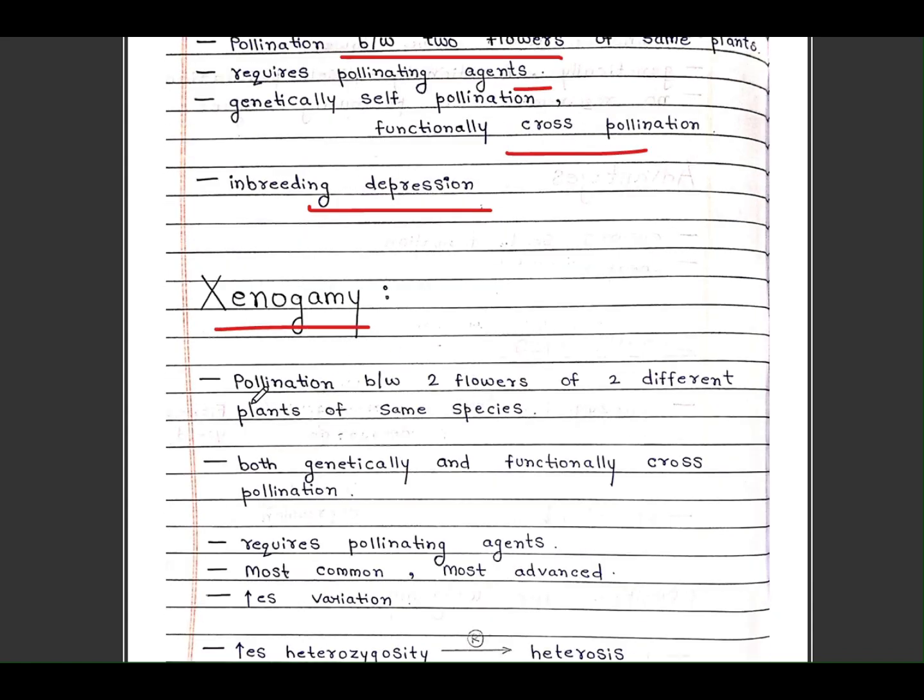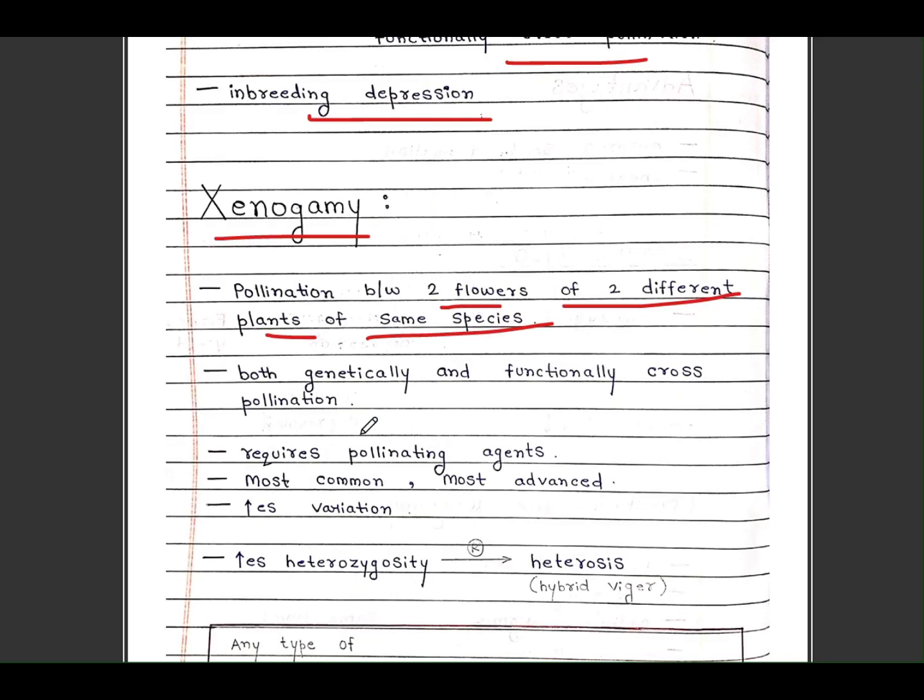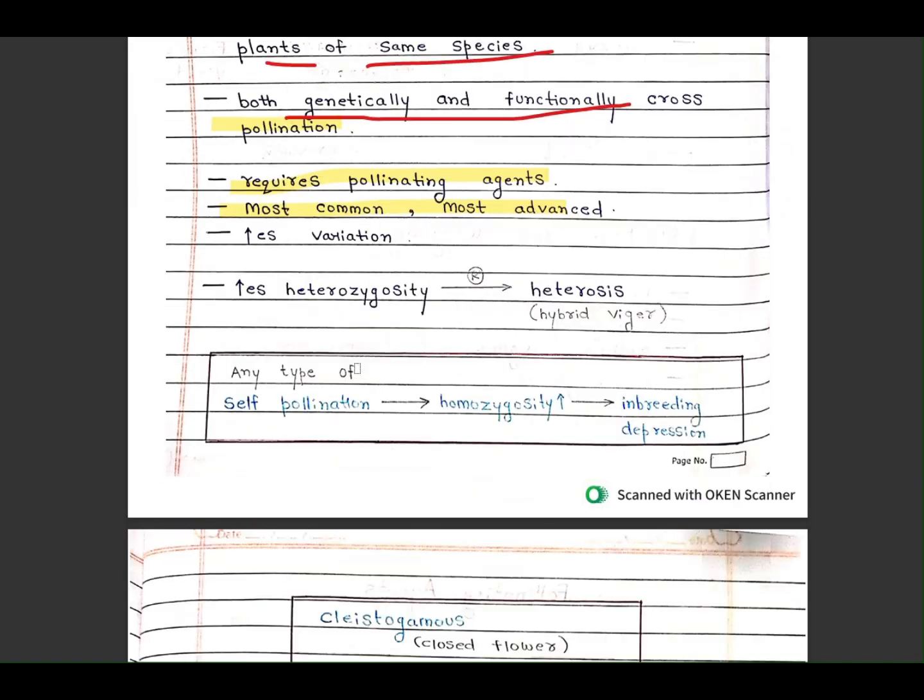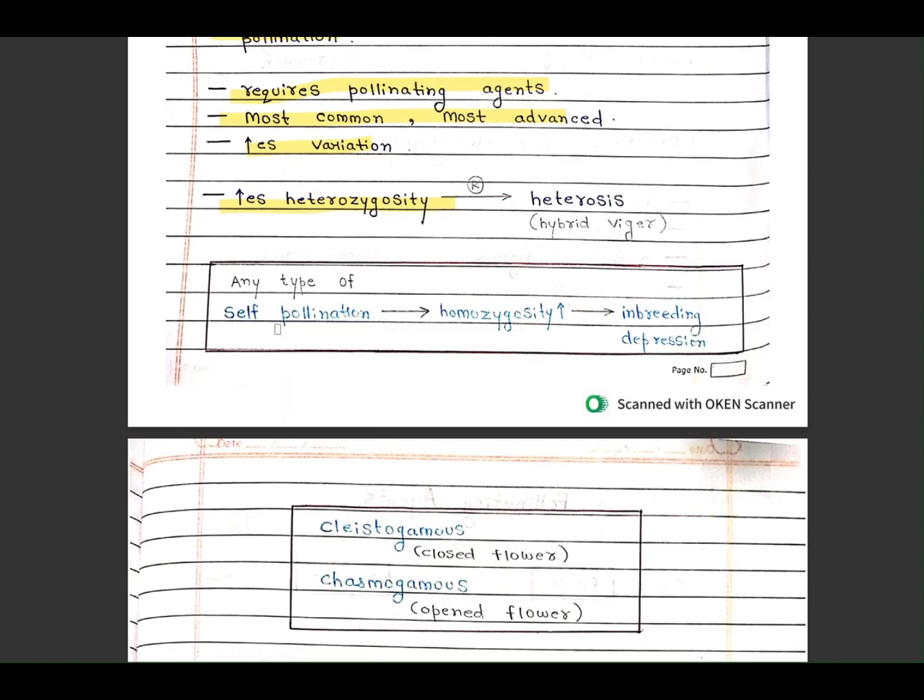Xenogamy: pollination between two flowers of different plants of same species. Both genetically and functionally cross-pollination. Requires pollinating agents. Most common and advanced. Increases variation, increases heterozygosity. Any type of self-pollination increases homozygosity and inbreeding depression.